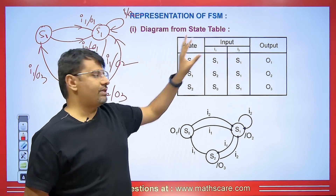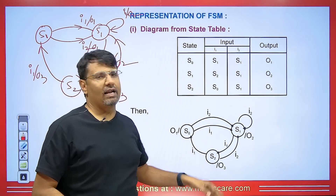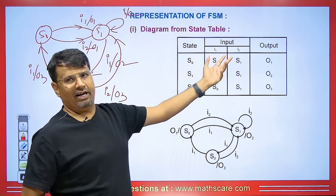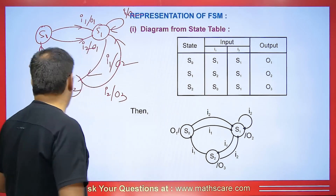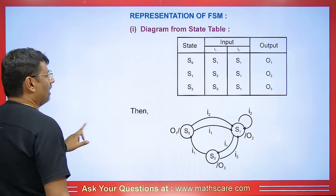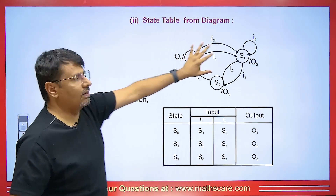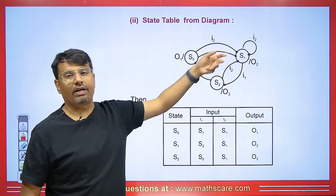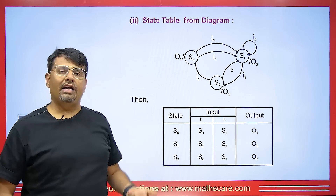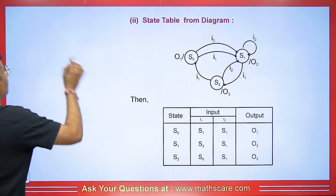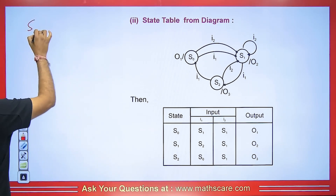This is how a diagram is made from a table. Sometimes it is just the other way around — we have a diagram and we have to make a table. No need to worry. First of all, we will write the state here, then we will have input.